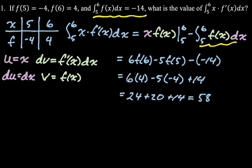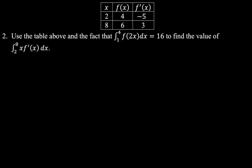So that's one example, but that one didn't start with tables. Let's take a look at another one — similar, but a little different. Use the table above and the fact that the integral from 1 to 4 of f of 2x dx equals 16, to find the value of the integral from 2 to 8 of x f prime of x dx. Same deal — we're going to use integration by parts. This is a classic setup for that.